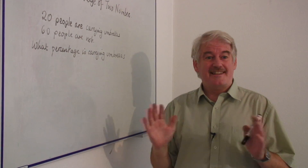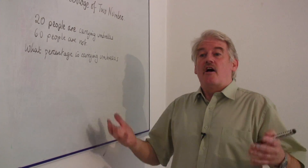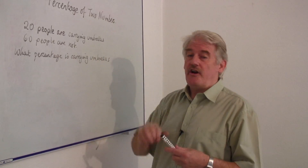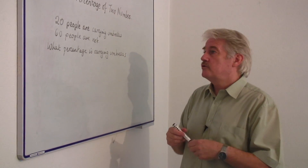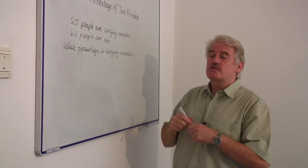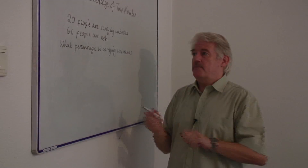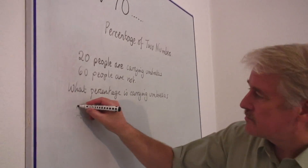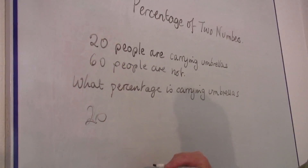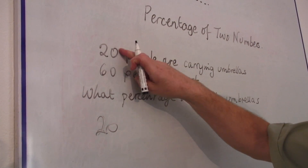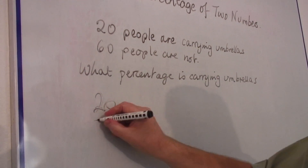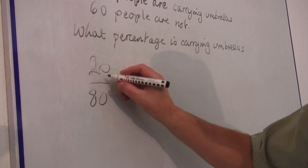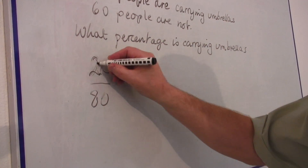Well, first of all, the percentage is of the whole number of people, not just of the people who are not. So let's have a look at it first — of the total people. Twenty people are carrying umbrellas, let's put twenty down there. But the total number of people, twenty plus sixty, is eighty. So I'll have twenty divided by eighty as my basic fraction on which to work.